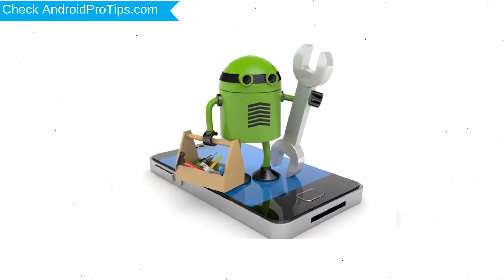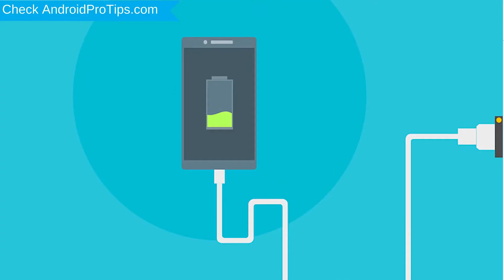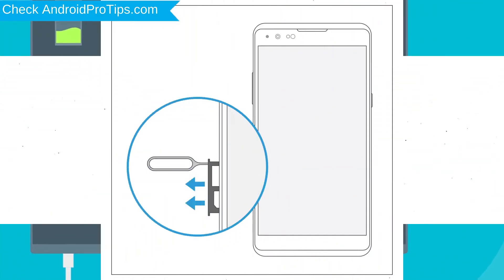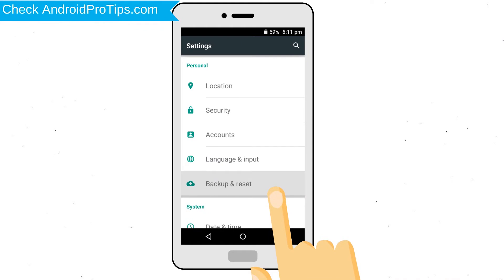Before resetting your mobile, your battery must be above 50%. Remove SD cards and SIMs. Back up your Android mobile data if possible.